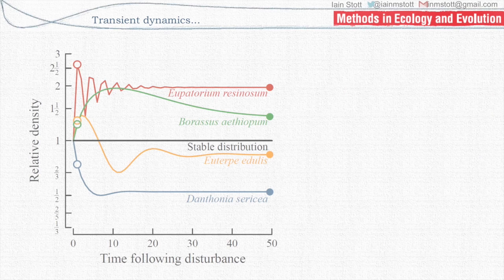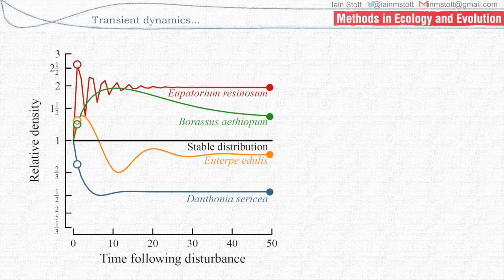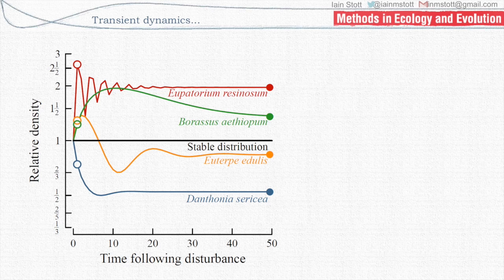Still just with density-independent and time-invariant models — here are four different plants. They're cycling, getting bigger than they would be if they were at stable structure, or they get bigger and then smaller, or they just get smaller. You can measure transient dynamics really at any time point in the projection. A couple of points marked here have turned out to be quite useful: what happens in the very first time step, your immediate response to some kind of disturbance, and the long-term consequences of transient dynamics — how much bigger or smaller does your population end up as a result.